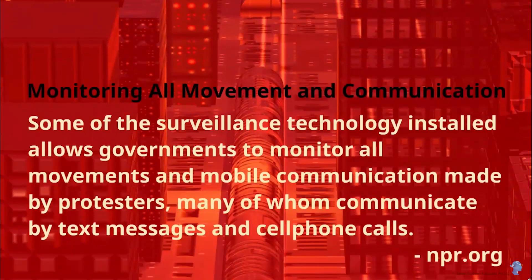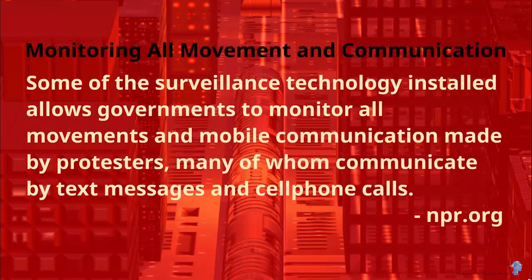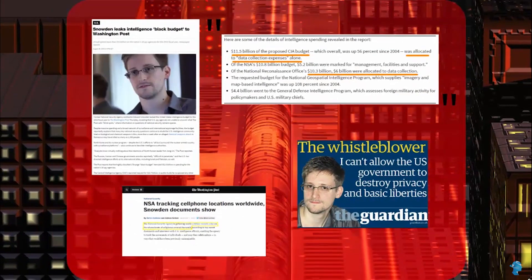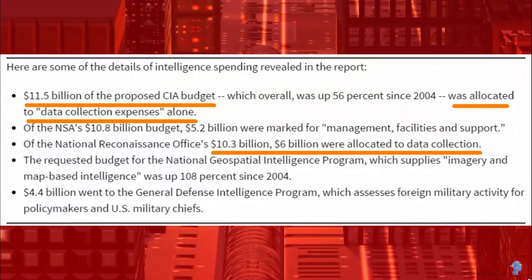Not just dictatorial and oppressive governments — even democratic governments like the United States have been in the eye of the storm. Edward Snowden made startling revelations of how the US government has been snooping not just on other world leaders but even on its own citizens. The US government came up with the explanation that they are doing it to prevent terror attacks, claiming that since 9/11 there has been no terror attack in the US, primarily because they are using stats and data to prevent such incidents from happening again.